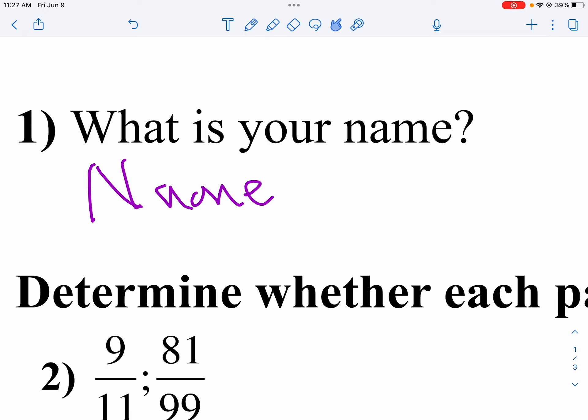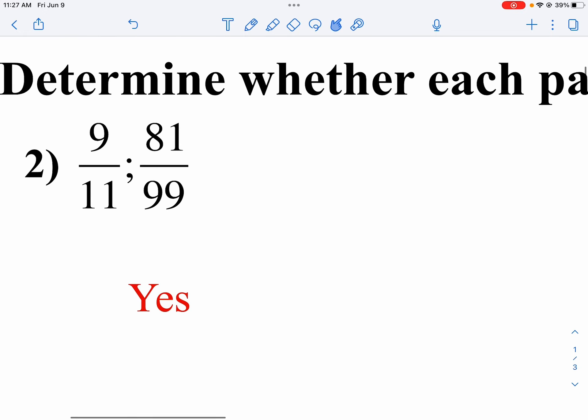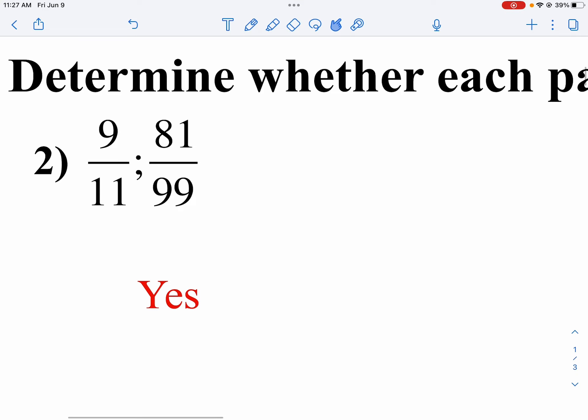On question number 2, notice 9 to 11 is in lowest terms. If I reduce 81 to 99, do I get 9 to 11? Well, look, if I divide by 9, I get 9 over 11. So yes, this is a proportion because proportions are two equal ratios.